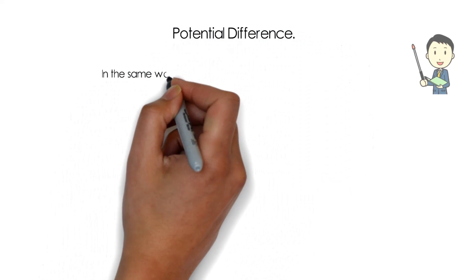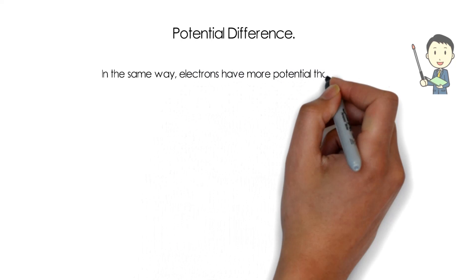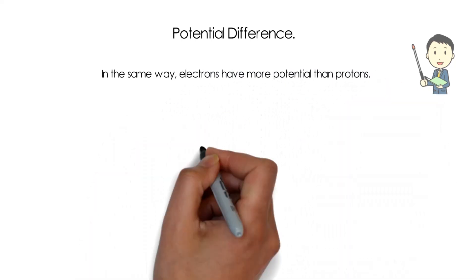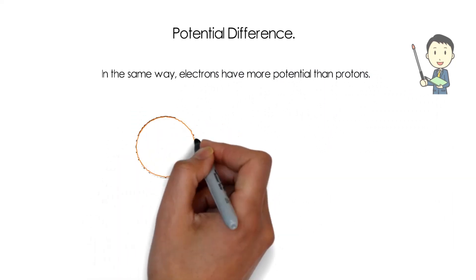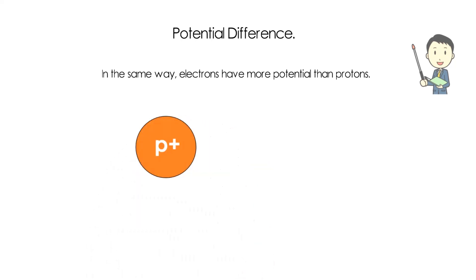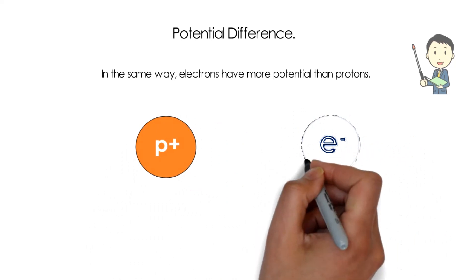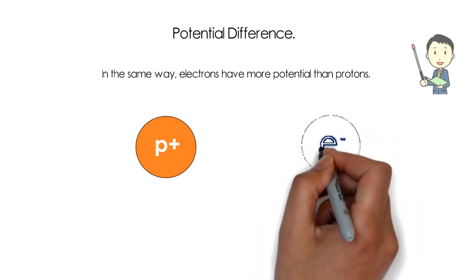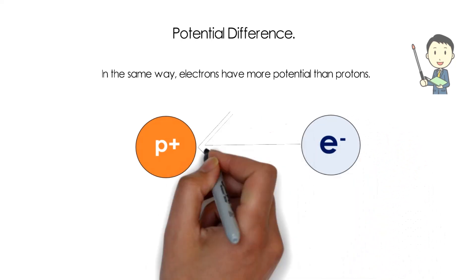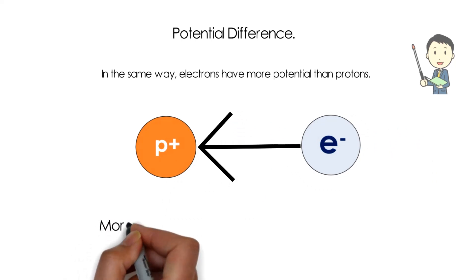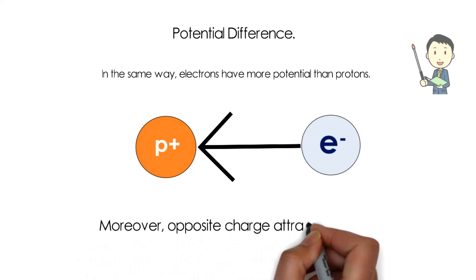Similarly, if we compare the energy levels of protons and electrons, we find that the energy level of electrons is more than that of protons. So whenever protons and electrons are kept together, the electrons will move towards the protons. In other words, protons attract electrons. We also know that opposite charges always attract each other, so whenever opposite charges are kept together they will be attracted.